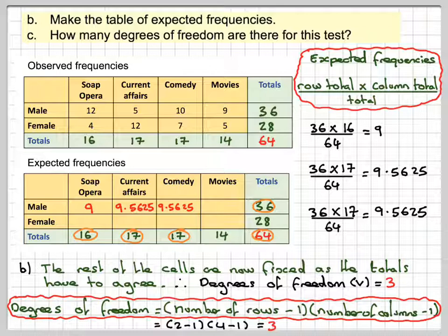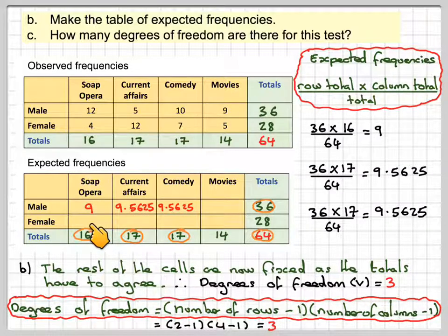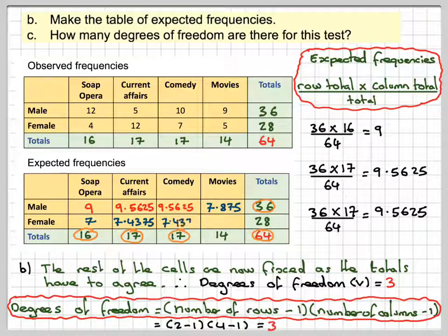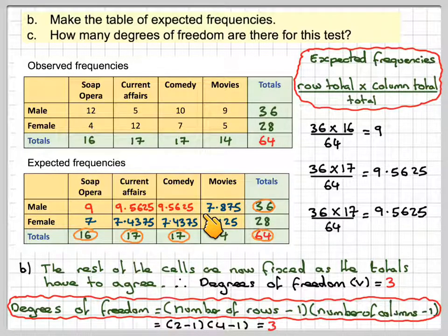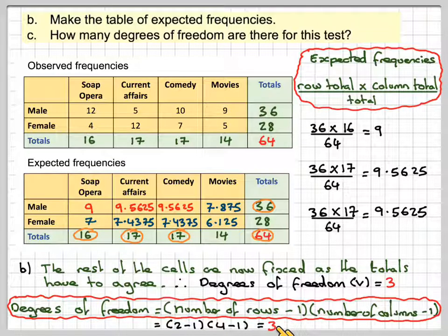To calculate expected frequencies: multiply the row total by the column total and divide by the grand total. Once you've calculated a few, the rest are restricted. So the remaining values are 7, 7.875, 7.4375, 7.4375, and 6.125. This makes the table add up correctly. This table can be produced using the GDC, which is the expected method in the math studies exam — the calculator gives you this value straight away by inputting the observed values into a matrix.